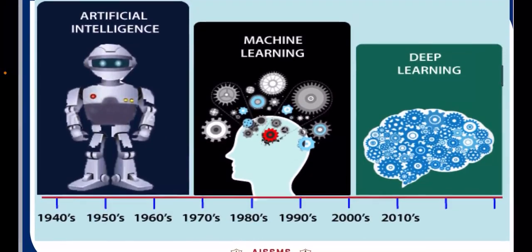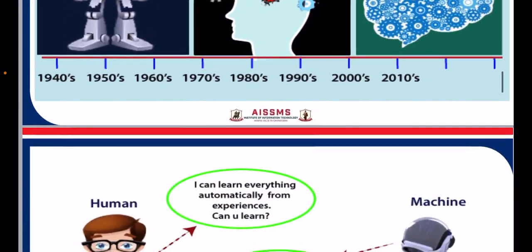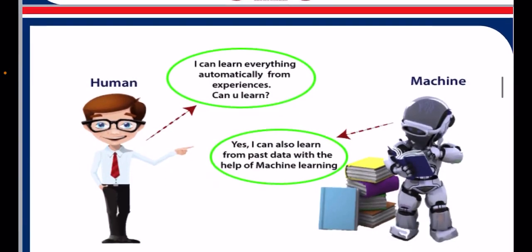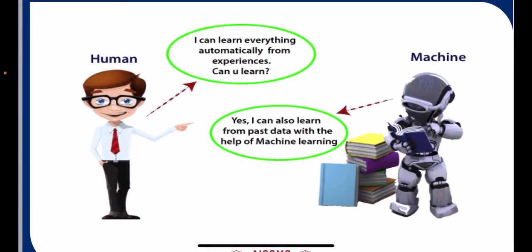Before we go for machine learning, we have just talked about AI. Then why do we need machine learning? A human says to a robot, or we can say a machine: 'I can learn everything automatically from experience.' And that machine, which we are going to train with machine learning, says: 'Yes, I can also learn from past data with the help of machine learning.'